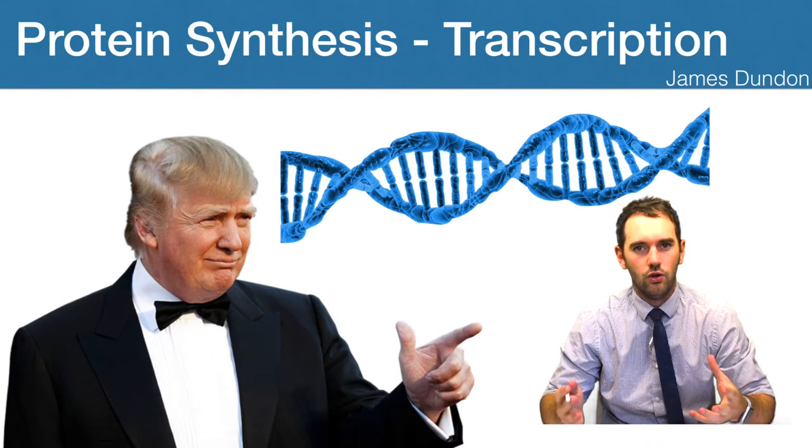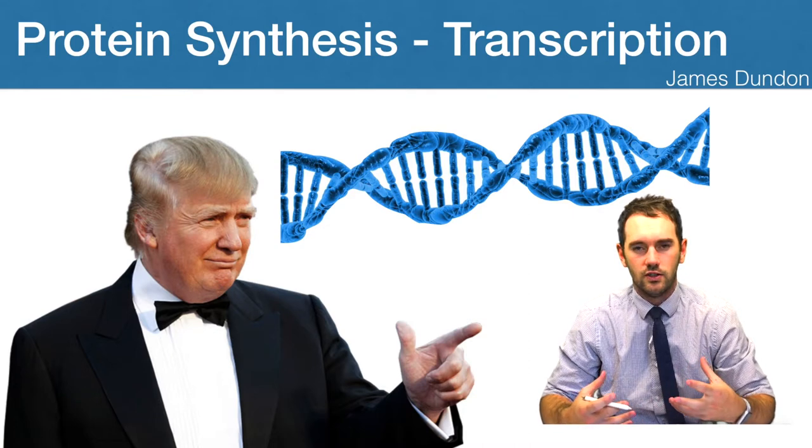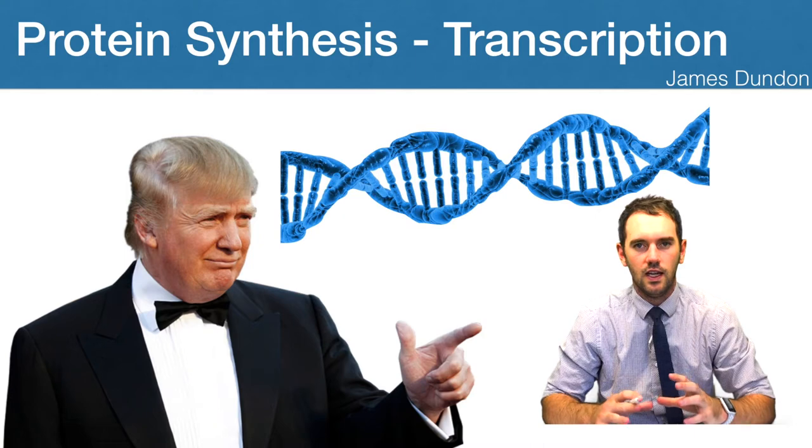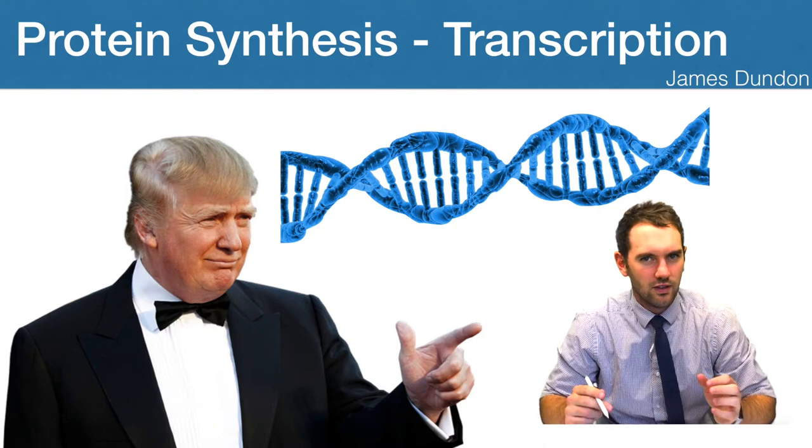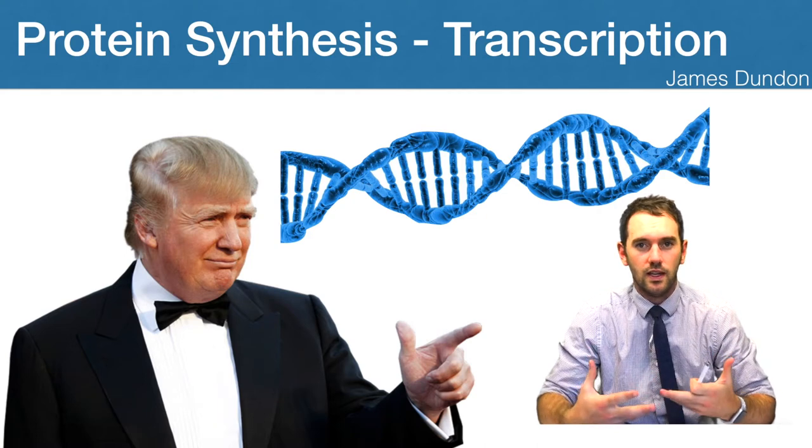How do we take that code of A's, T's, G's and C's and make that into some actual structures and functions within his body? Because every single living thing has DNA, but not everything looks the same. So there must be something happening where we're converting that code into building things.